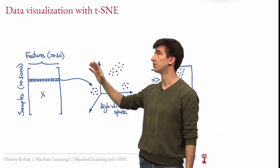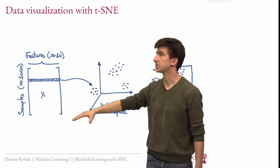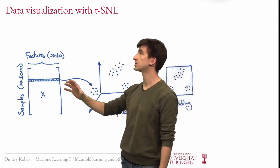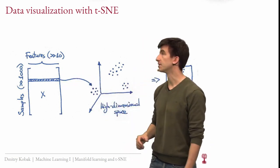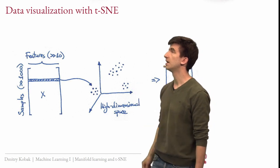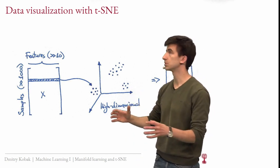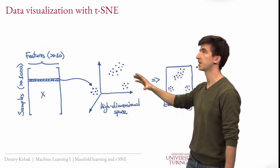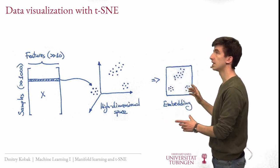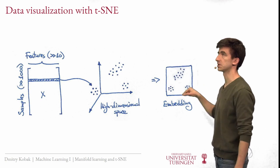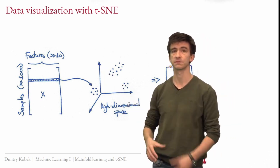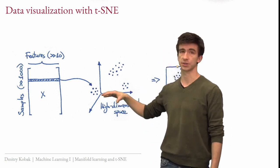As a reminder, in this unsupervised learning setting we have some data matrix X where samples are rows and features are columns. We are not trying to predict anything, so there is no Y matrix. Instead we are trying to find some interesting structure in this data. Each sample, each row of this matrix, is a point in a high dimensional space. For dimensionality reduction, we want to reduce the number of dimensions from this potentially high dimensional space to a low dimensional space. Today we are going to be talking about two dimensional data visualizations, reducing dimensionality just down to two, which can be plotted as a scatter plot. This is also called embedding.